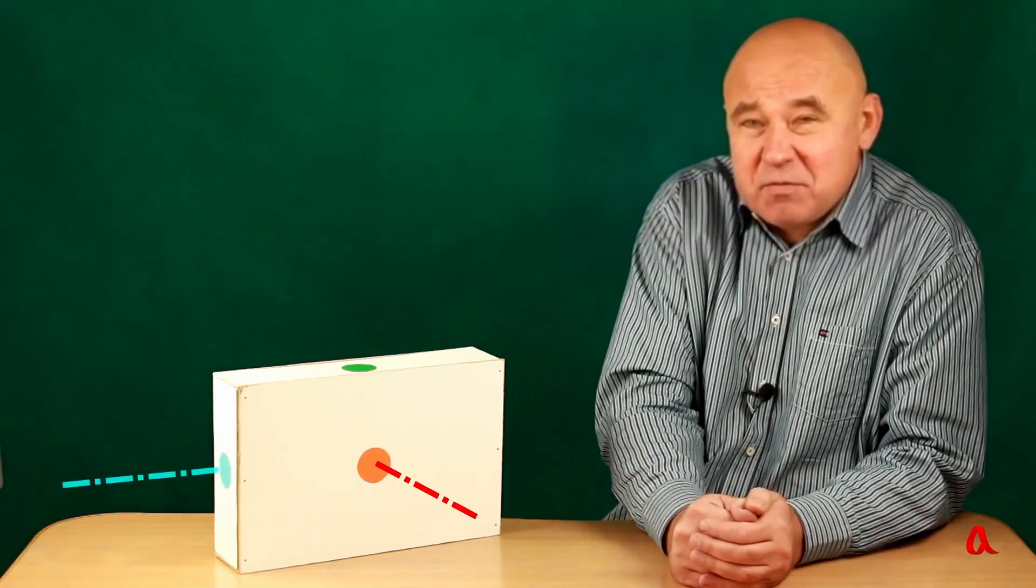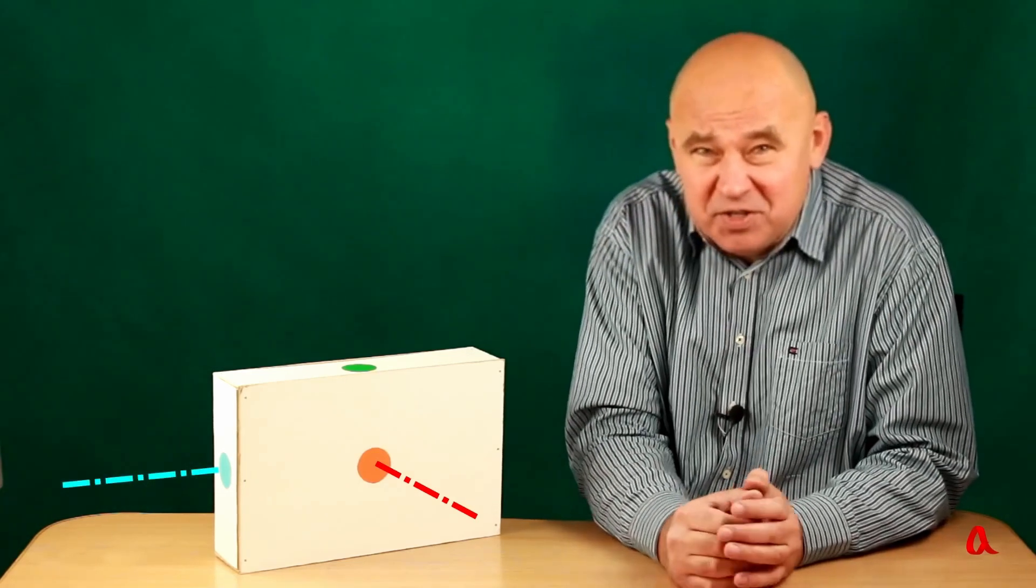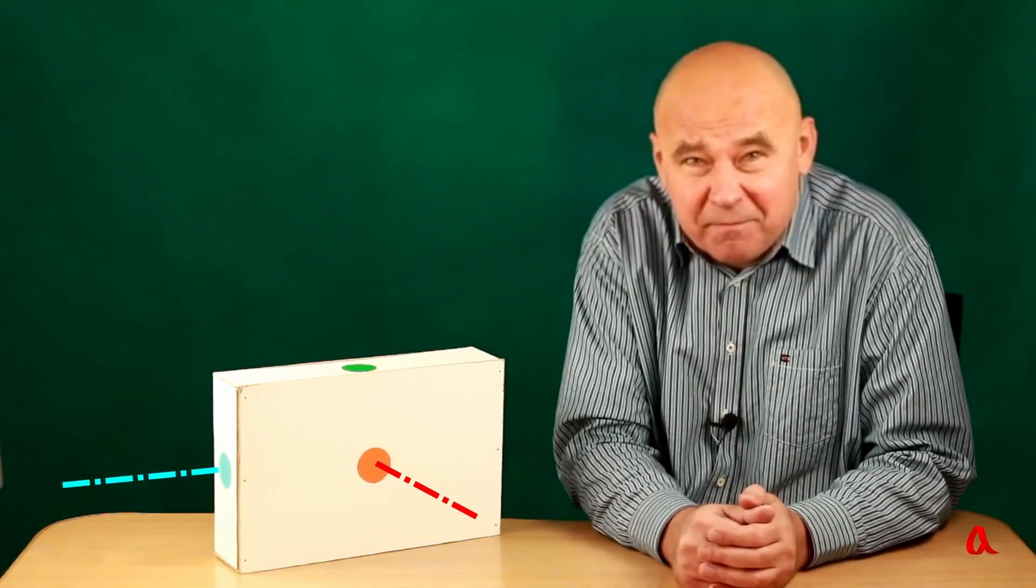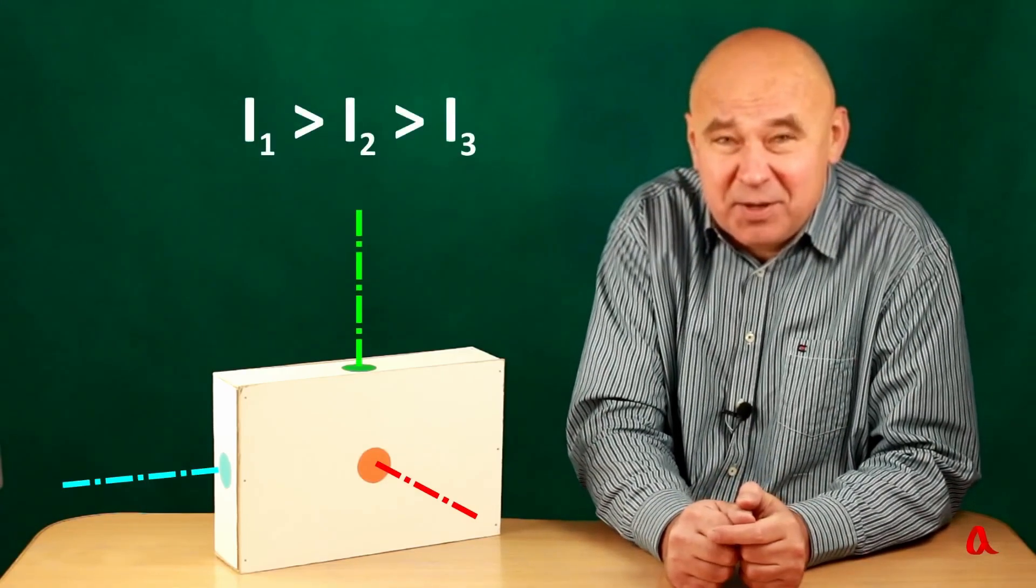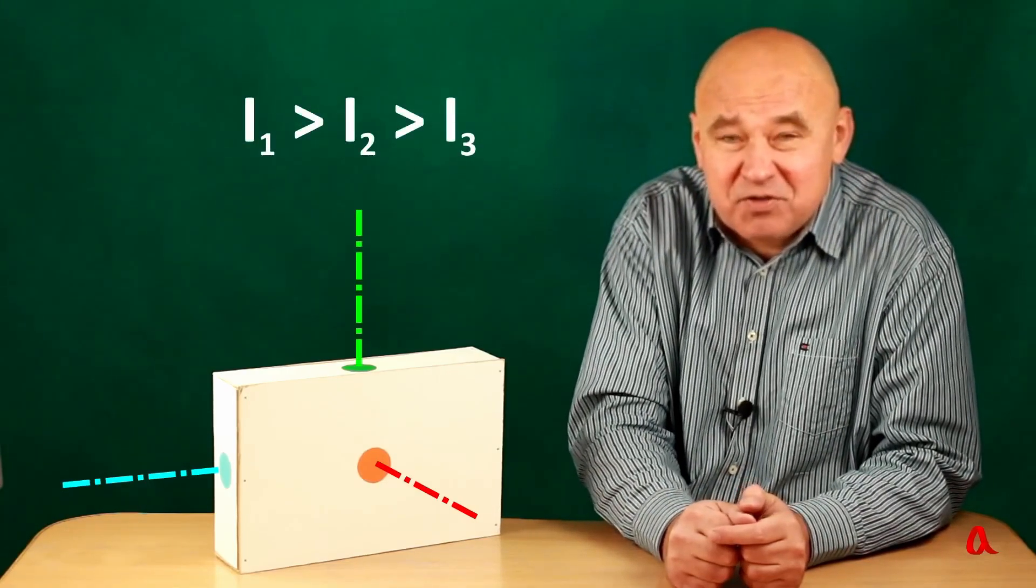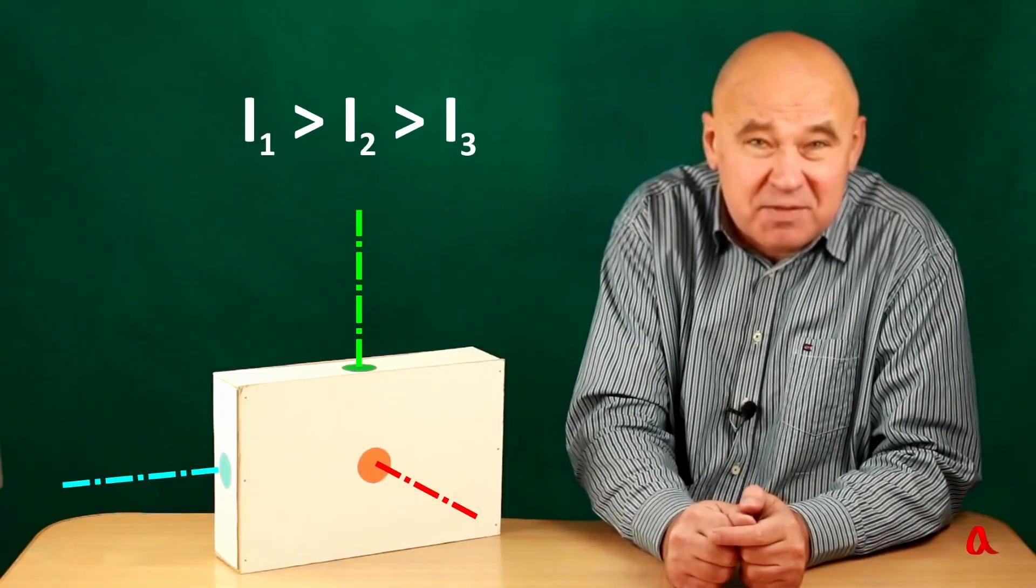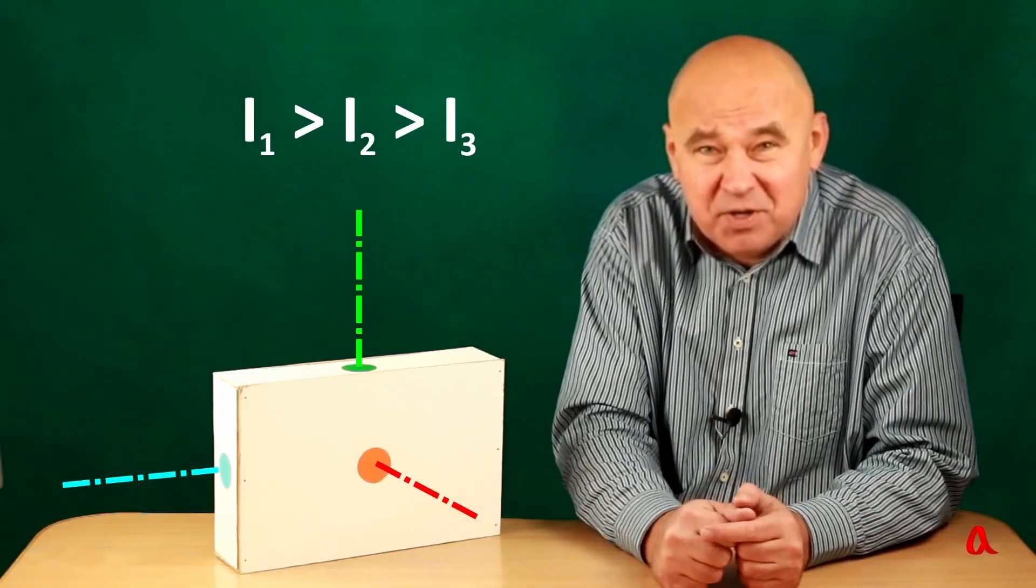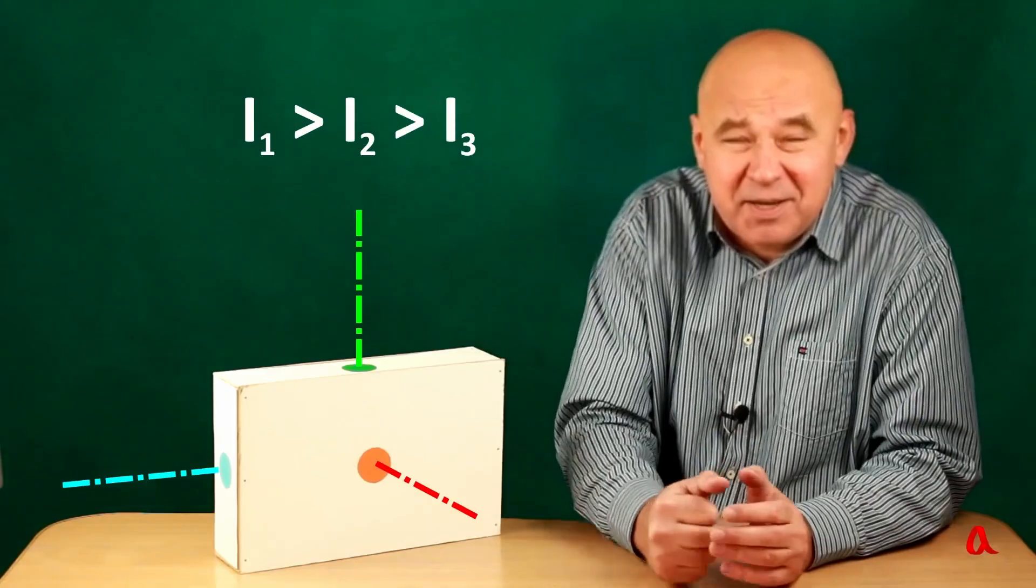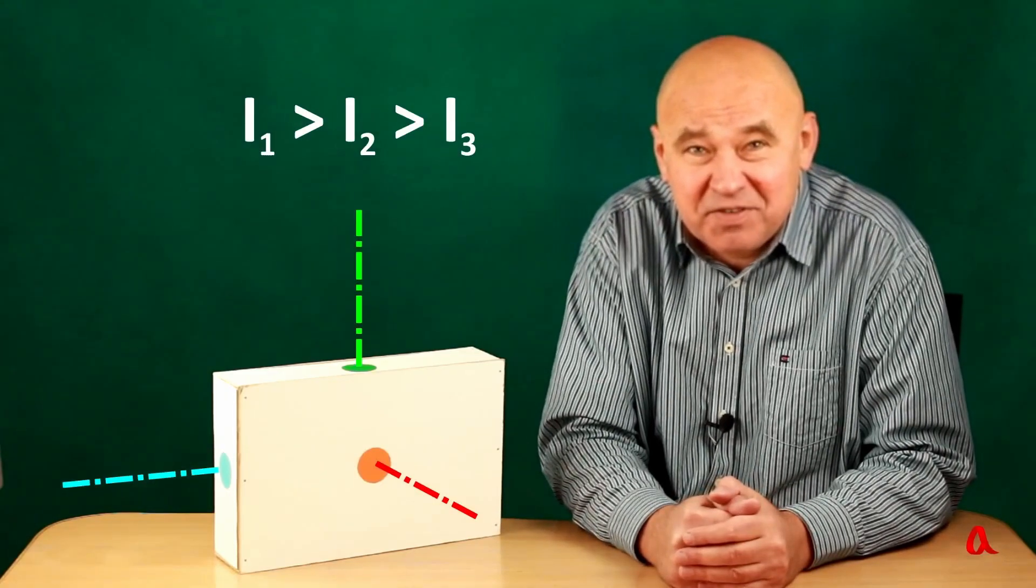When the box rotates around the blue axis, the moment of inertia is at its minimum value. And when rotating around the green axis, the moment of inertia turns out to be intermediate between the maximum and minimum. It is exactly when rotating around this axis that the movement of the body becomes unstable.